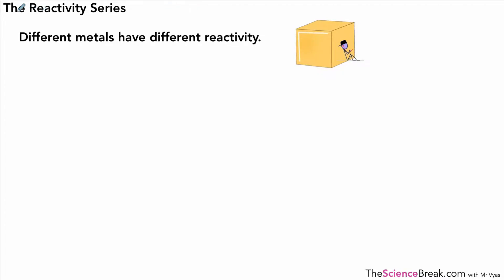Hello, we're going to take a look at the reactivity series of metals. Different metals have different reactivity. We spoke about a couple of metals in our last video and talked about gold. The symbol is Au, and we said it was very unreactive. It didn't react with oxygen at all. In fact, it doesn't react with anything else either.